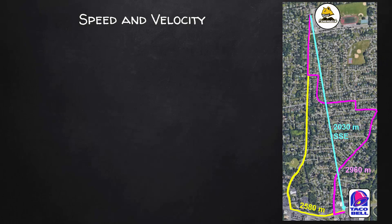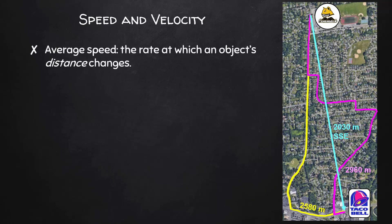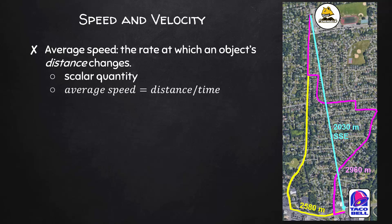We also want to determine my speed and velocity. Average speed is the rate at which an object's distance changes. It's a scalar quantity, and average speed equals distance divided by time. The unit for speed is meters per second — we can write this as meters times seconds to the negative one power, which is how you'll see it in IB documentation, or we could write it as m/s.